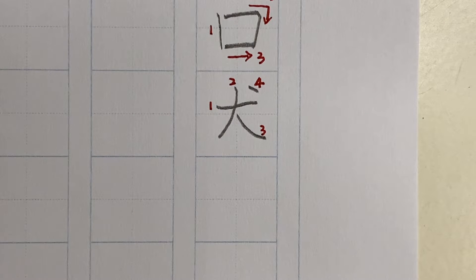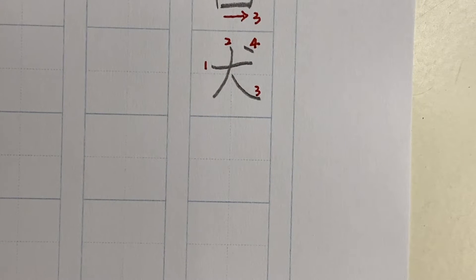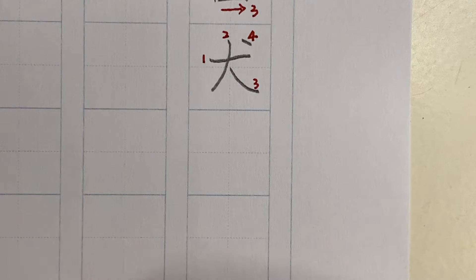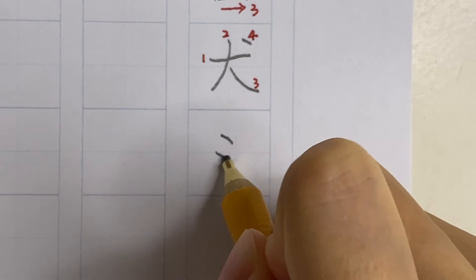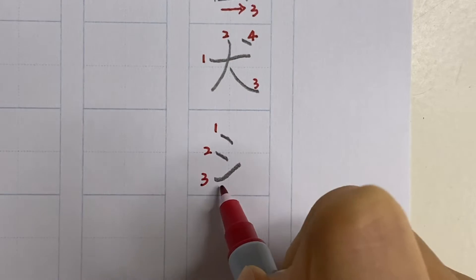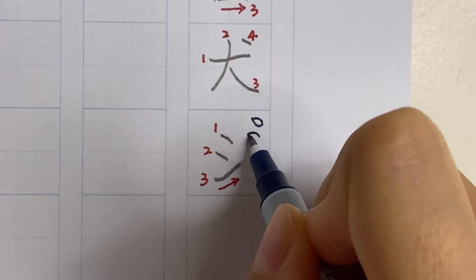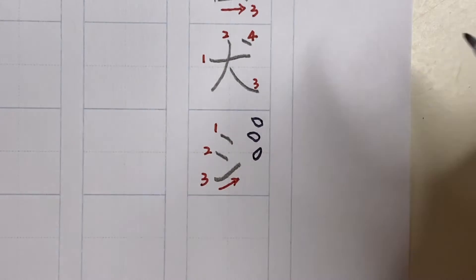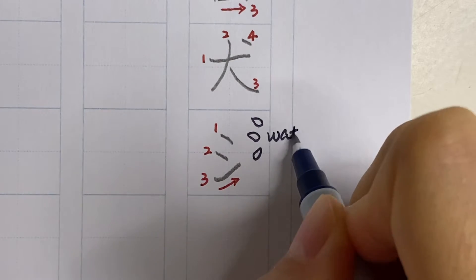So now after knowing the rules, let's write the most common components of the kanji. The first one is just three dots. Remember the sequence? It's always left to right and top to bottom, just like the shape of three water drops. And this means the water.